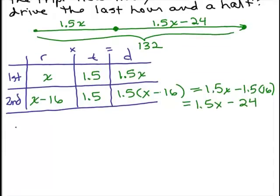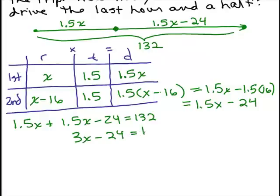So that's what we want to write. The first piece, which is 1.5x plus the second piece, 1.5x minus 24, equals the total distance, which is 132. So I could add like terms here on the left, which is going to be 1.5x plus 1.5x, 1 and a half plus 1 and a half, that's just 3. So we have 3x minus 24 and then we can solve by adding 24 to both sides and dividing by 3.